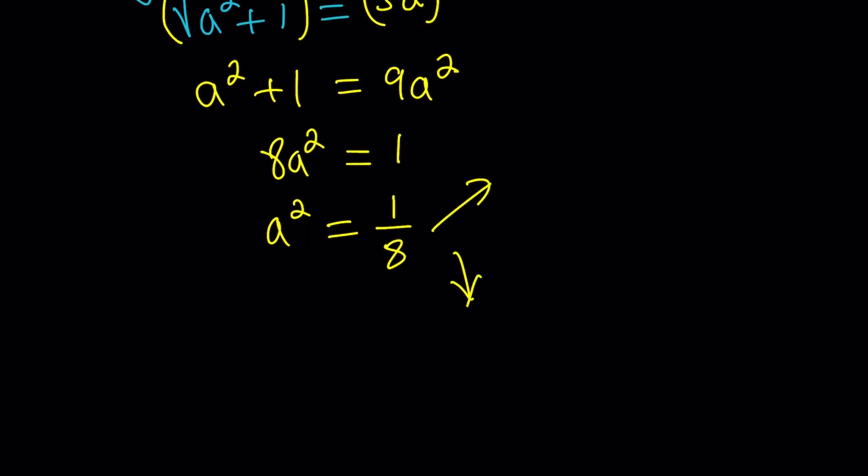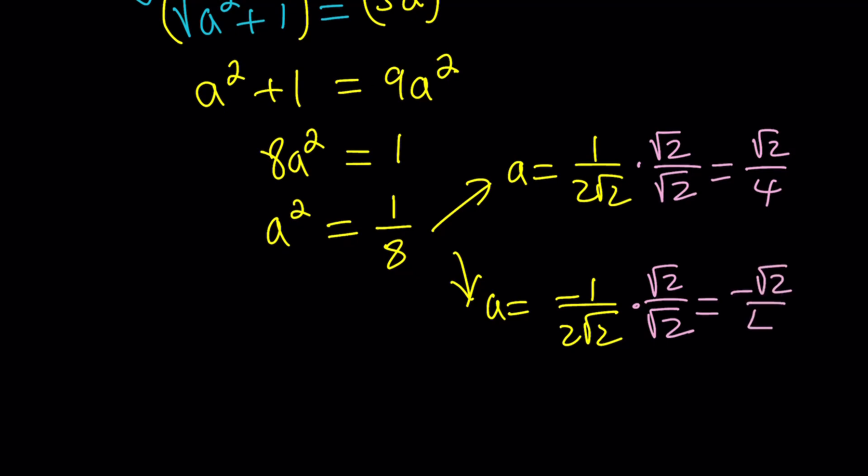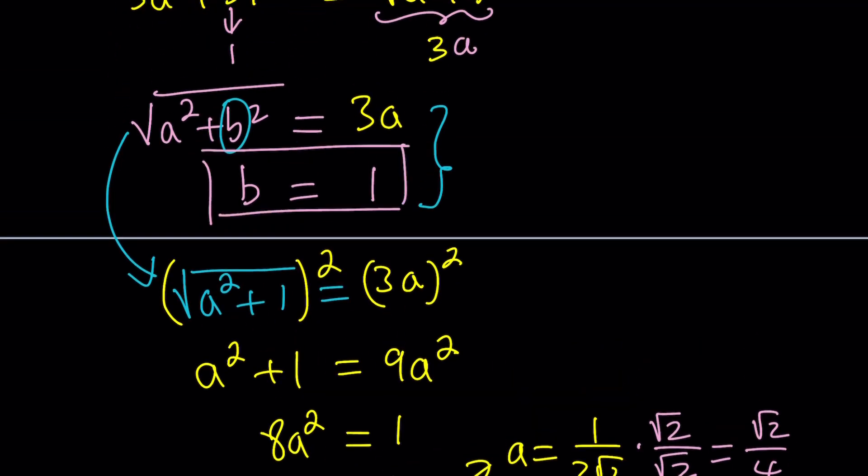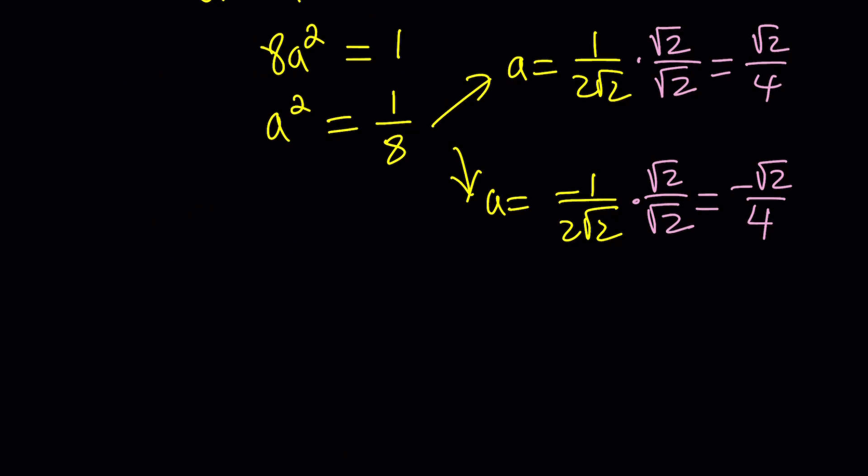This gives us two solutions because there are two numbers whose square equals 1 over 8. Those numbers are the square root of 1 over 8 and the opposite, but we can write it as 1 over 2 root 2 and negative 1 over 2 root 2. If you rationalize the denominator by multiplying by the radical conjugates you would get root 2 over 4 and negative root 2 over 4 for the A values. Since there's a single B value corresponding to two different A values, this gives us two solutions.